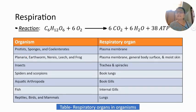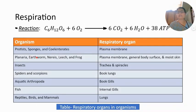In phylum Annelida, examples include Nereis, earthworm, and leech. These animals use the general body surface or moist skin for the purpose of respiration.